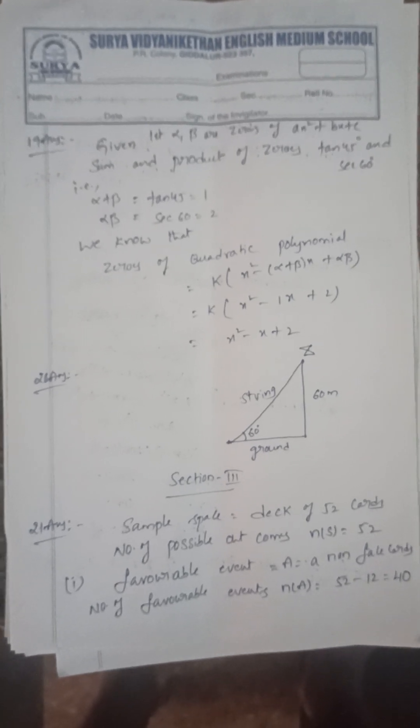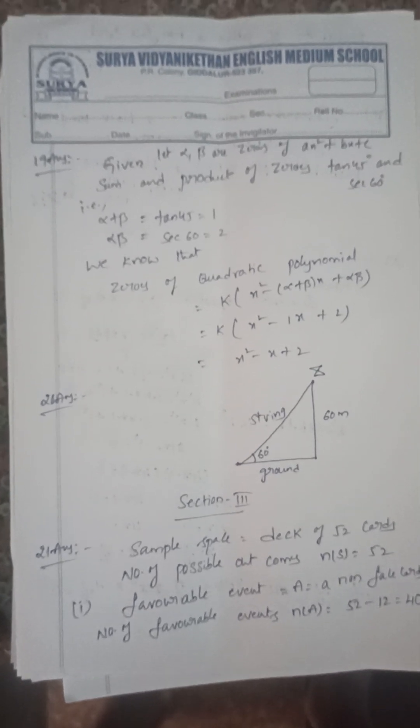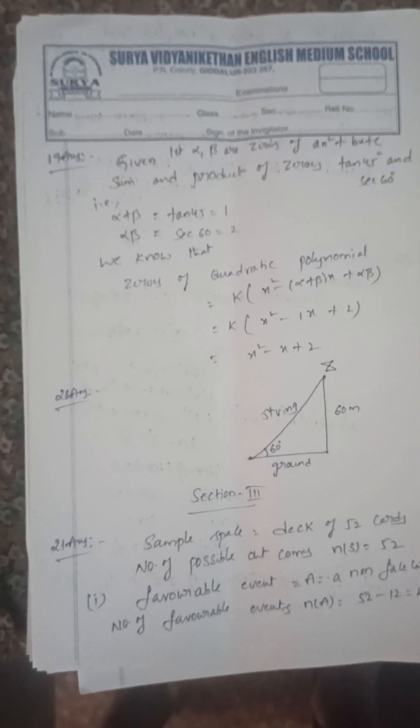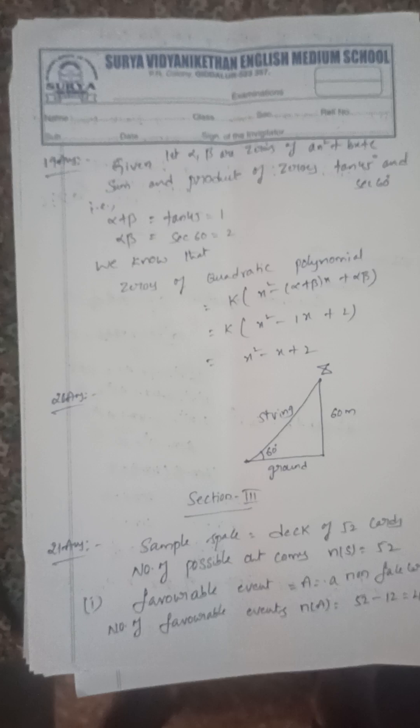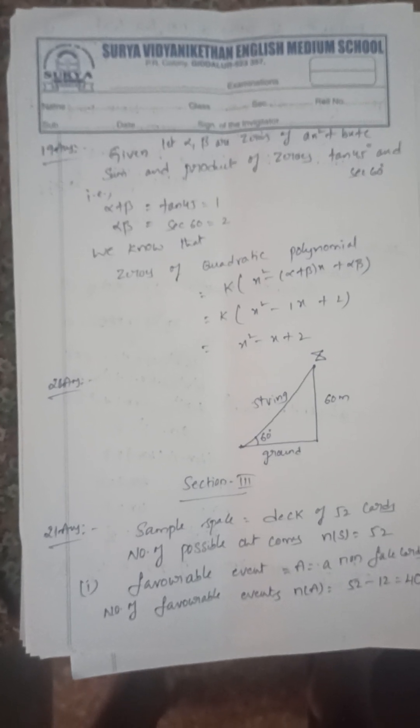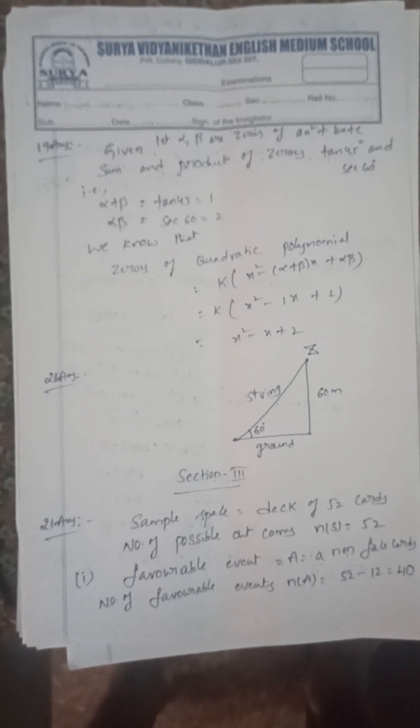Next, tan α = tan 45°, sec α = 60°. Sum of the zeros, product of zeros—find the zeros of the quadratic polynomial. So tan 45° is 1, sec 60° is 2. The general form of zeros of a quadratic polynomial is k(x² - (α + β)x + αβ). So that is x² - x + 2.